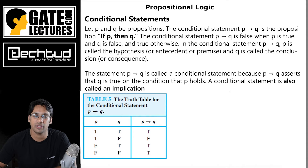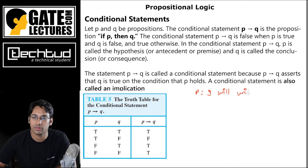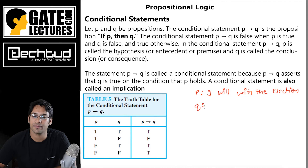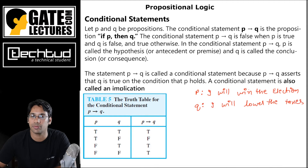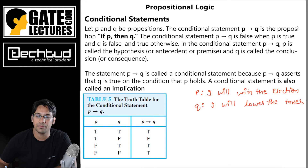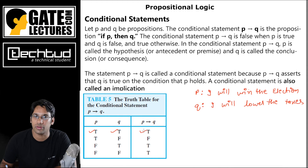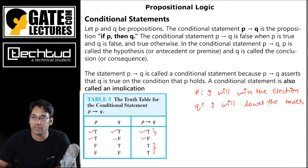Next is the conditional statement, also called implication (p implies q, written p → q). For example, p is 'I will win the election' and q is 'I will lower the taxes.' The truth table shows: if p is true and q is true, then p → q is true. If p is true and q is false, then p → q is false. In all other cases (p is false), p → q is true.